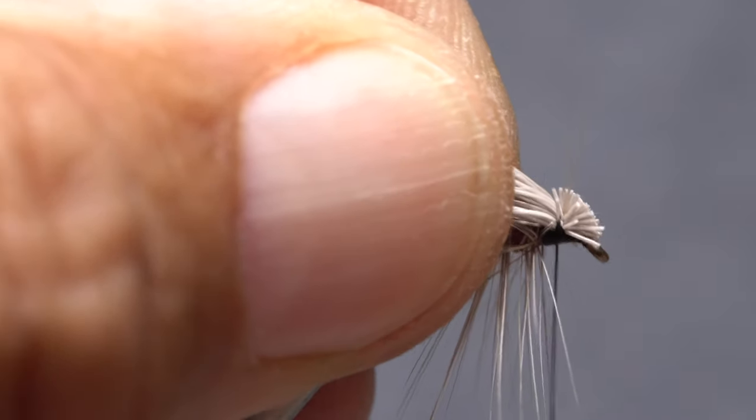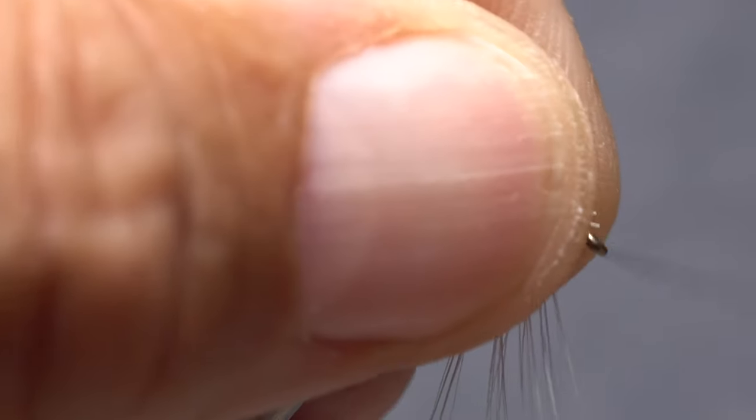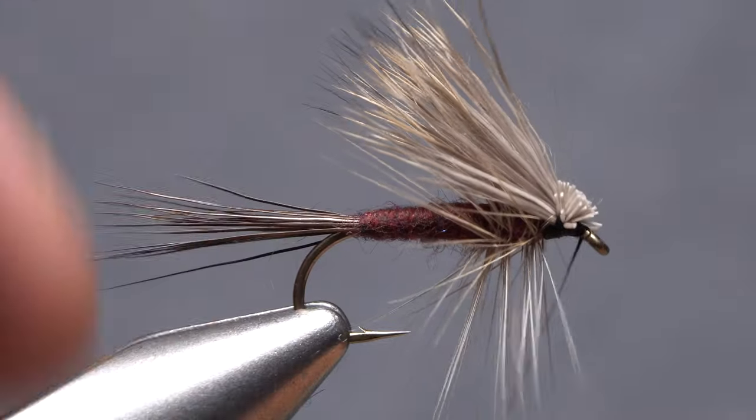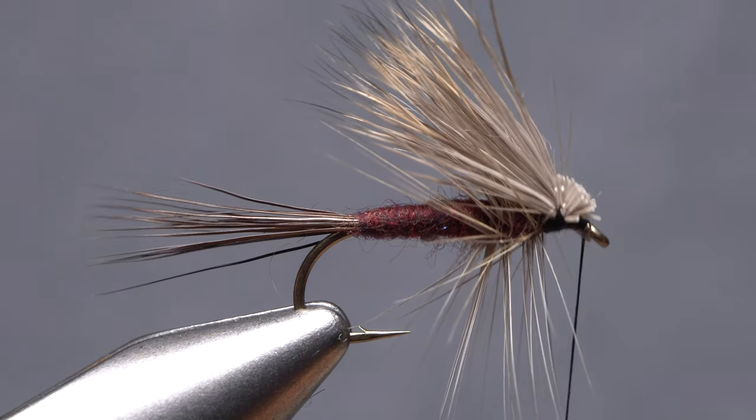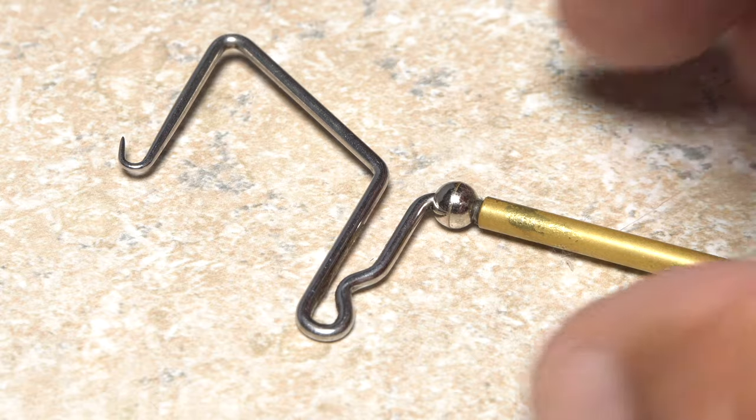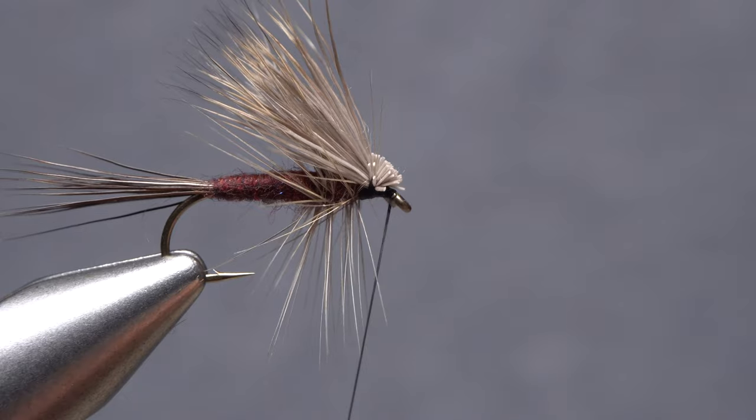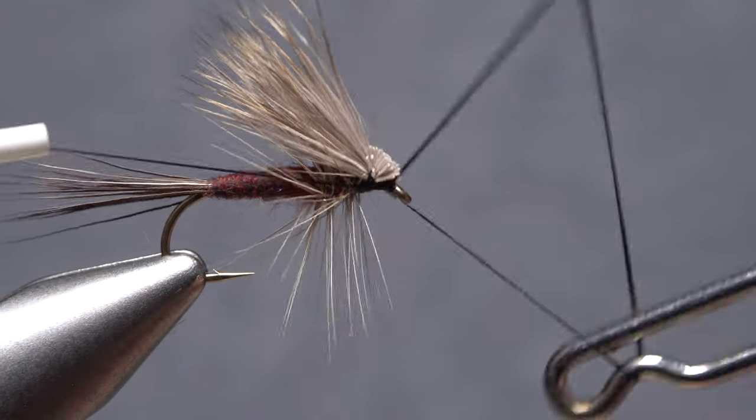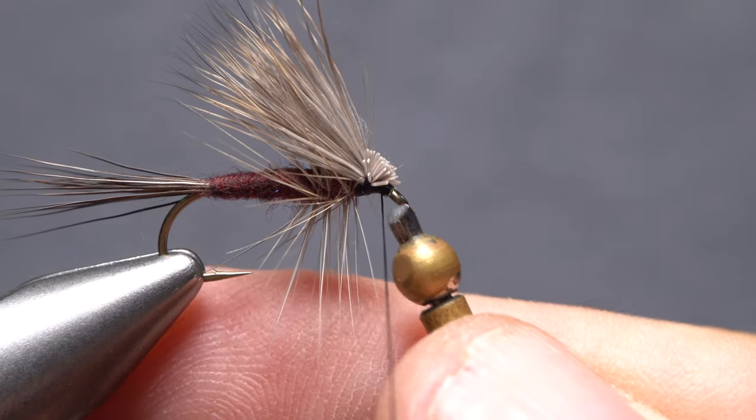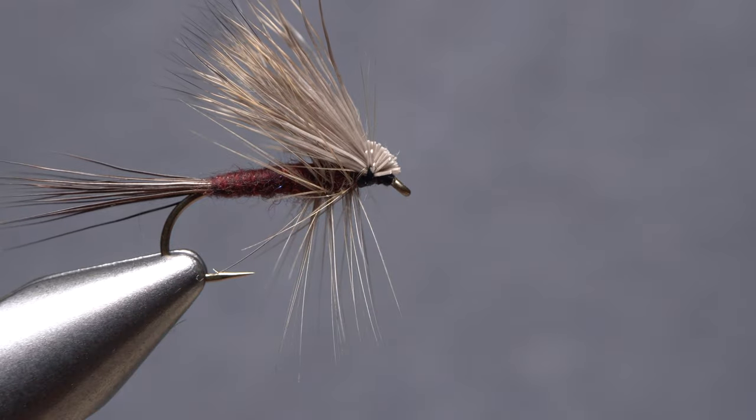Take one or two more thread wraps at this location, then bring your tying thread under and around to the back edge of the hook eye. Pick up your whip finish tool and use it to do a four or five turn whip finish behind the eye. Seat the knot well and snip or cut your tying thread free.